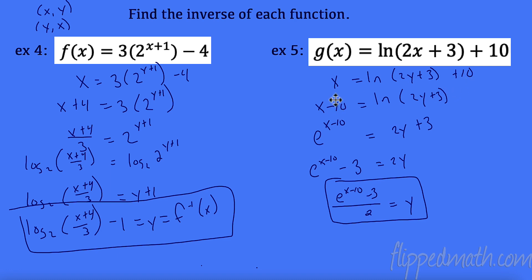Opposite of plus 10 minus 10. At this point I changed my logarithm into an exponential. Remember, natural log is just log base e. So that's e as the base to the exponent of x minus 10 equal to my argument of 2y plus 3. Opposite of plus 3 is minus 3, and then I had the whole thing and divided by 2. And bing, bang, boom, I'm done. I found my inverse of g of x.